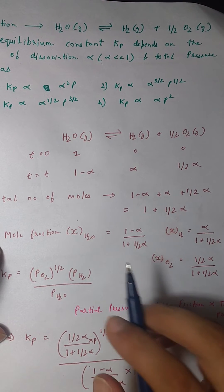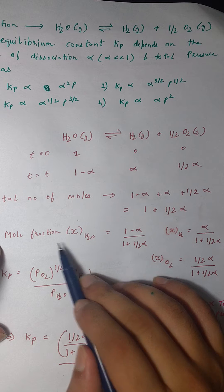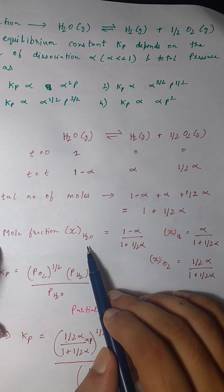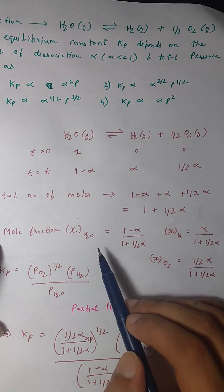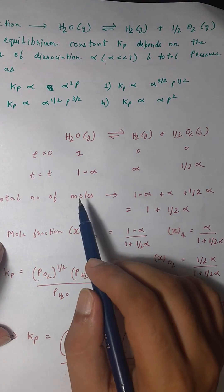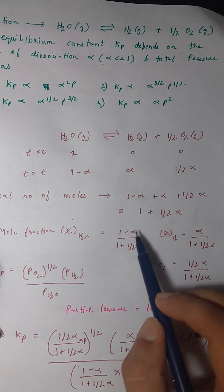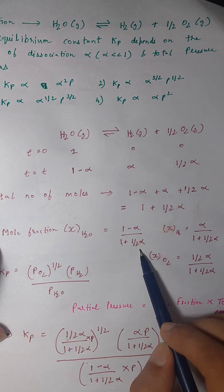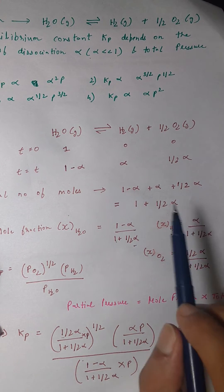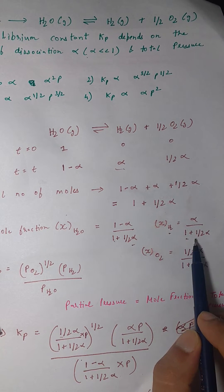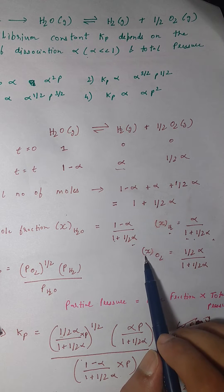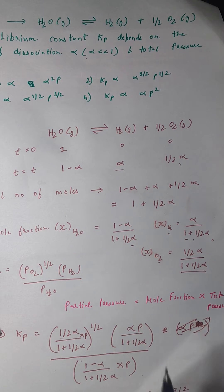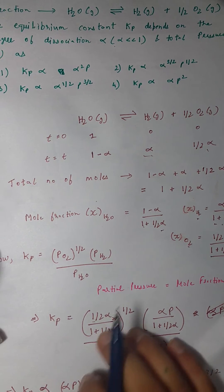Now we find the mole fractions. Mole fraction of H₂O = (1 − α) / (1 + ½α). Mole fraction of H₂ = α / (1 + ½α). Mole fraction of O₂ = (½α) / (1 + ½α).